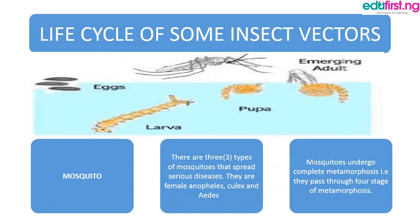Now, the life cycle of some insect vectors. Starting with the mosquito — there are three types of mosquitoes that spread serious diseases: the female Anopheles mosquito, Culex, and others. Mosquitoes undergo complete metamorphosis, passing through four stages: egg, larva, pupa, and adult. The adult female mosquito lays eggs in stagnant water, which hatch in two to five days into larvae.